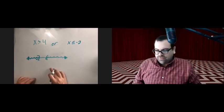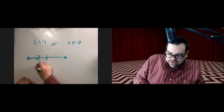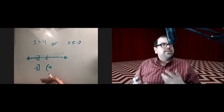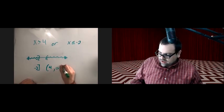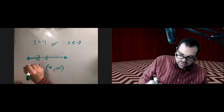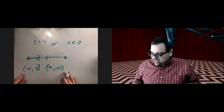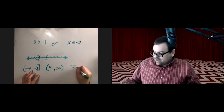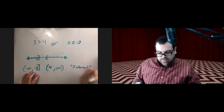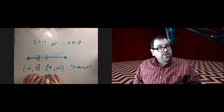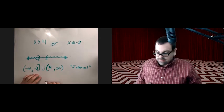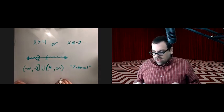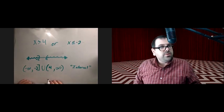From a graph we can clearly take the endpoints — whether it's a parenthesis or a square bracket — and use our infinities to indicate both directions going on forever. Infinities always take parentheses. If we have two intervals and want to take the union, we use the union symbol to connect disjoint intervals.